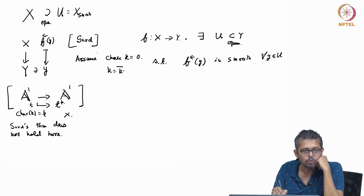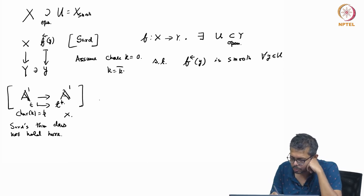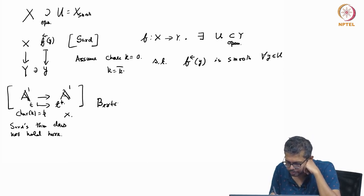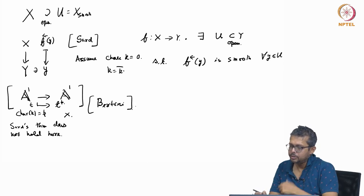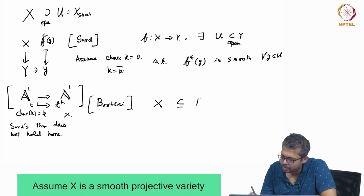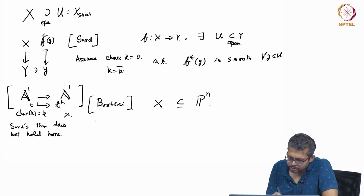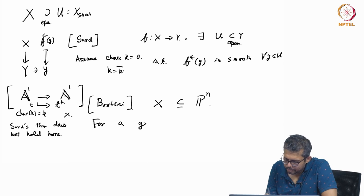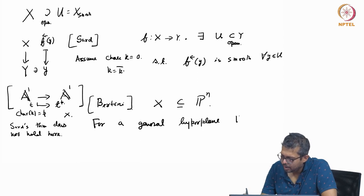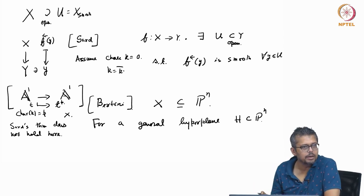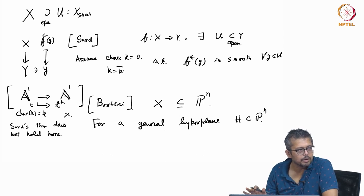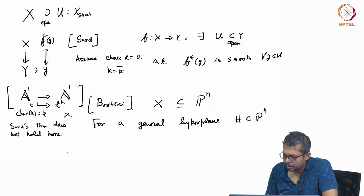But using Sard's theorem, I will come to the proof in the next class. Using this theorem, what you can prove is Bertini's theorem, which says: suppose X is a projective variety embedded in some P^n. Then for a general hyperplane H, given by a linear homogeneous polynomial, X intersection H is smooth.